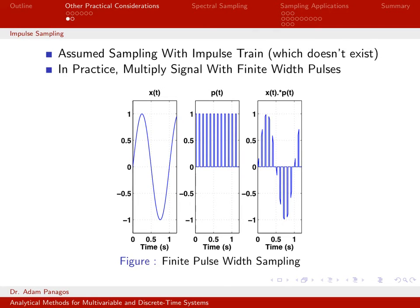if I sample a continuous time signal, x of t, with this more practical pulse train to result in a sampled signal that looks like this, can I still recover the original x of t? Or is this practical sampling different somehow?